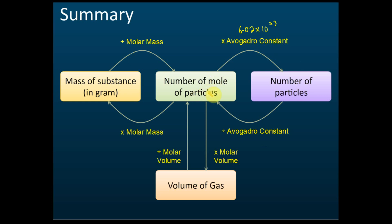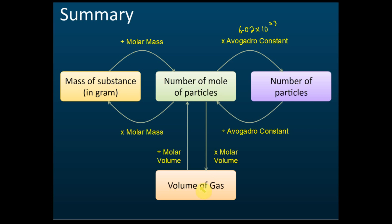Combining what we've just learned: if you know the number of moles and want to find the volume of a gas, multiply by the molar volume. Inversely, if you know the volume and want to find the number of moles, divide by the molar volume. In exams they won't give straightforward questions — they might give you the mass and ask you to find the volume of the gas, so you must find the number of moles first, then find the volume.